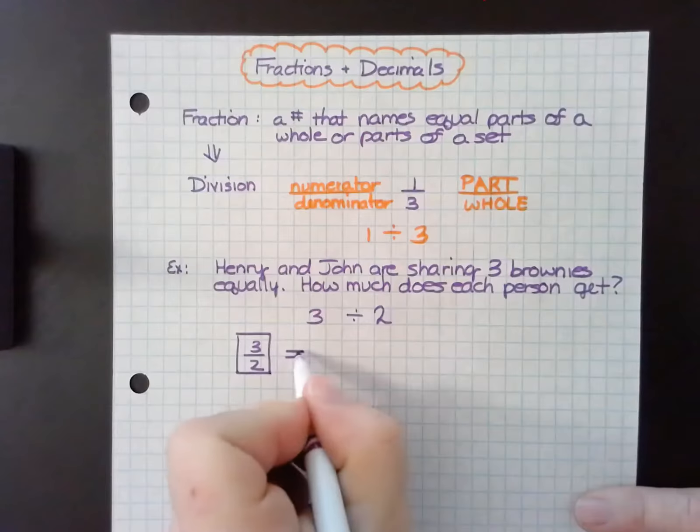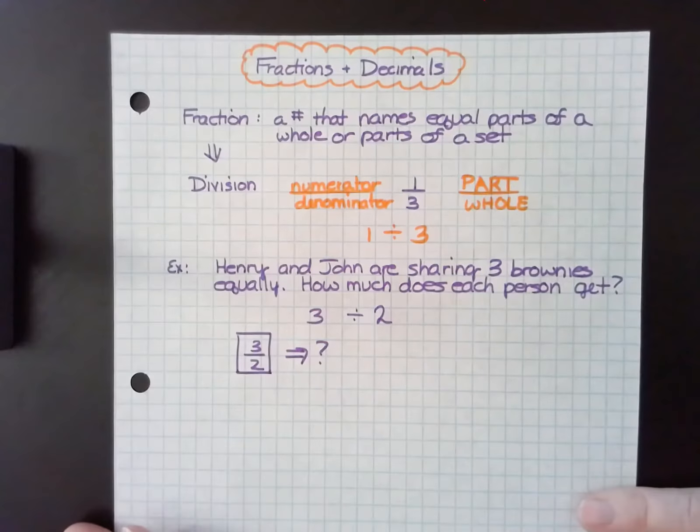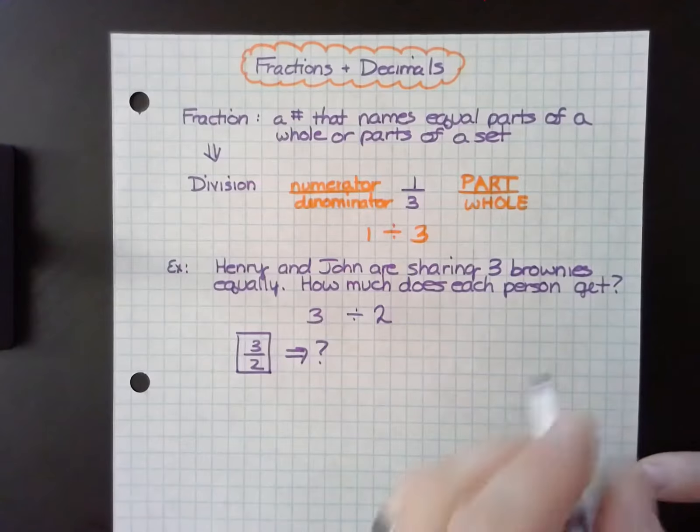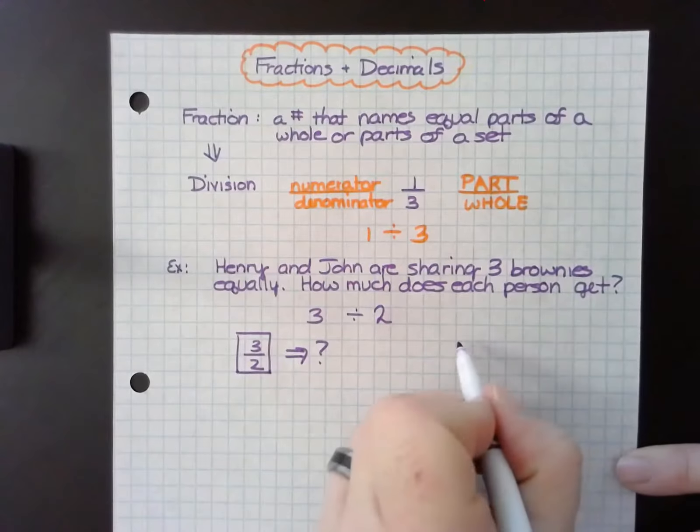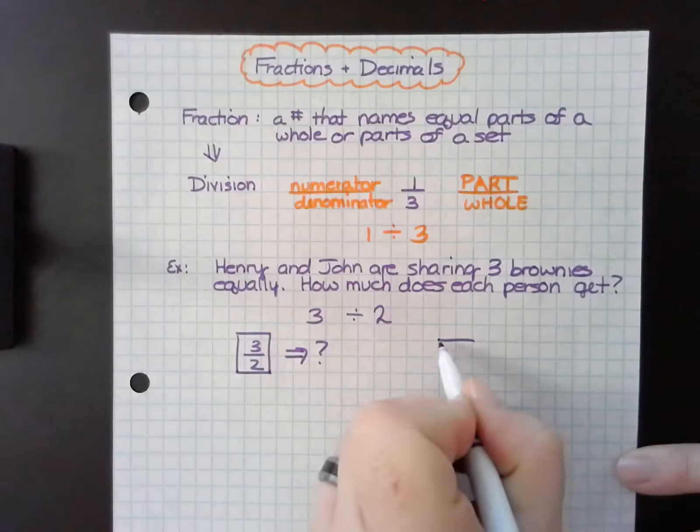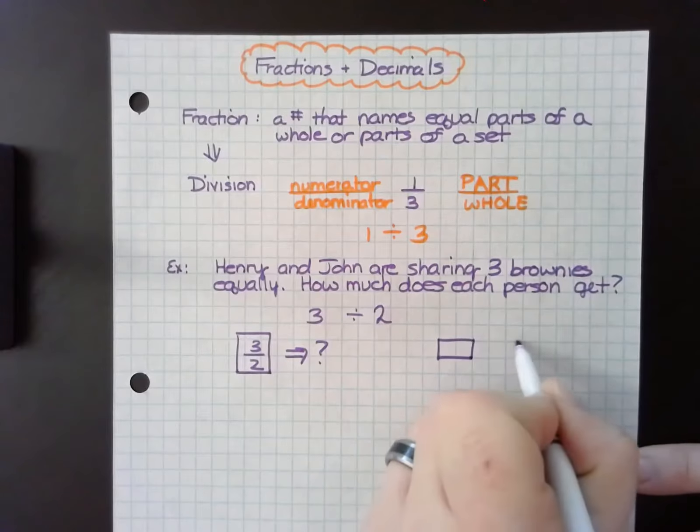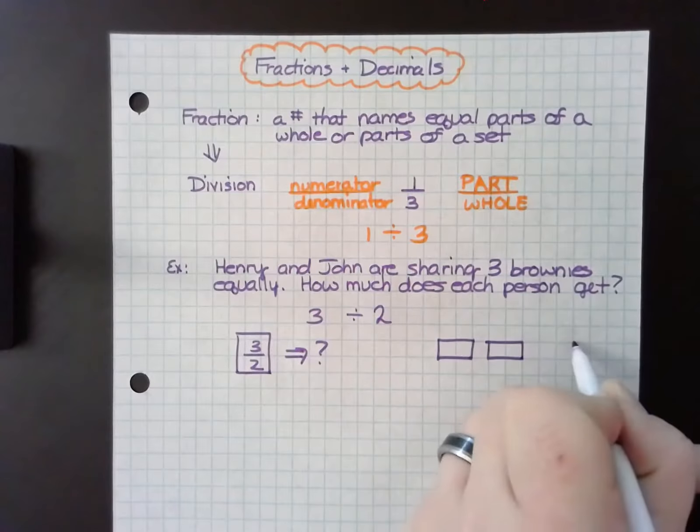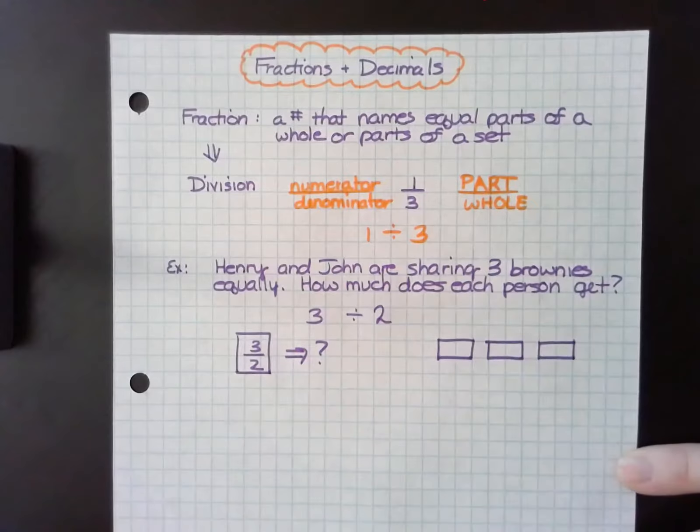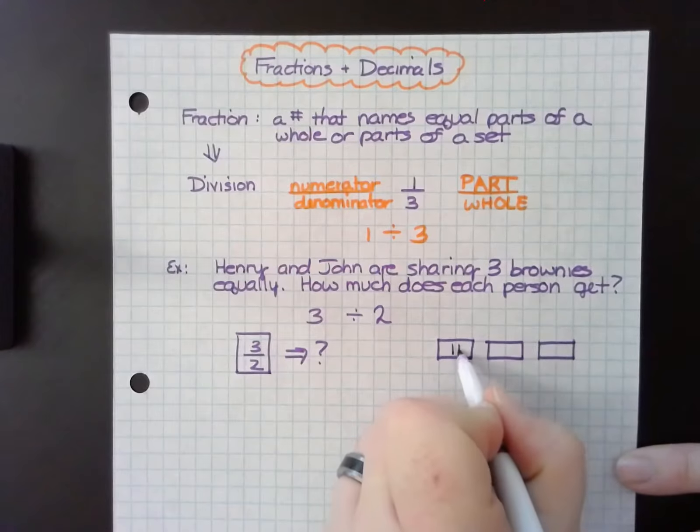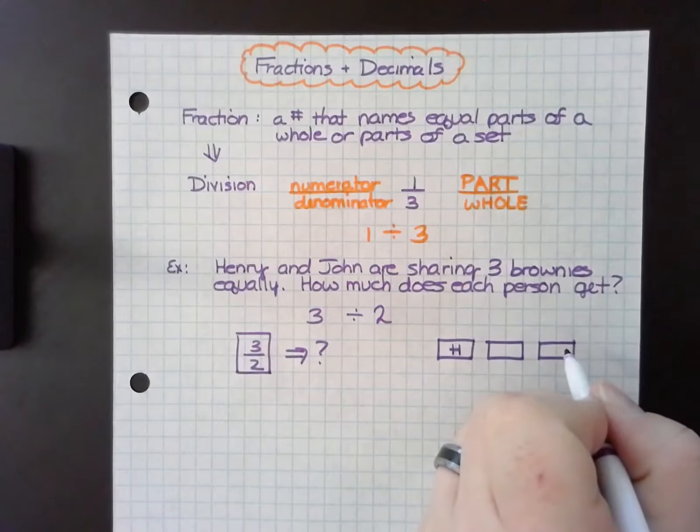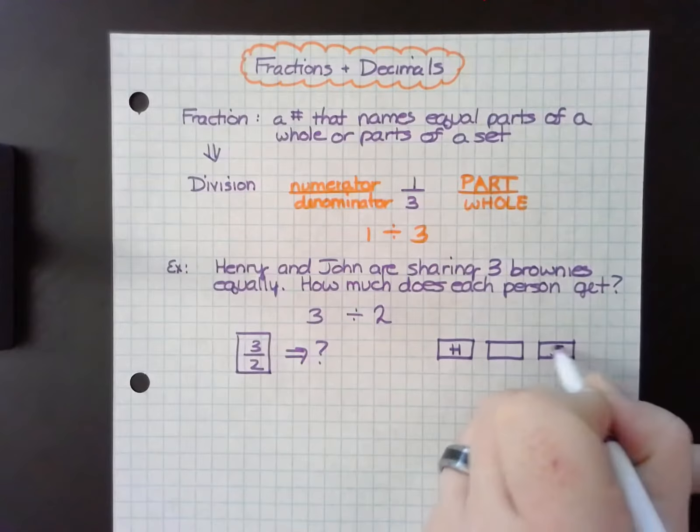But what does this look like? So it may be helpful to draw a visual. If I have three brownies and two people, I know that Henry can get one whole one and John can get one whole one.